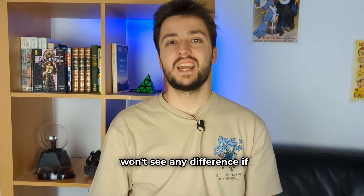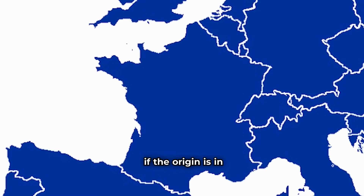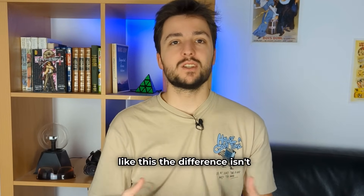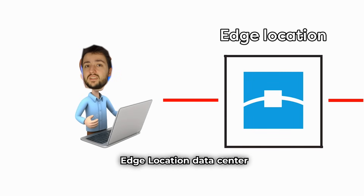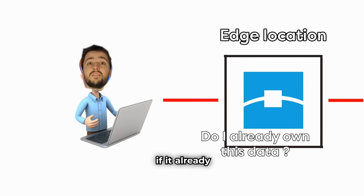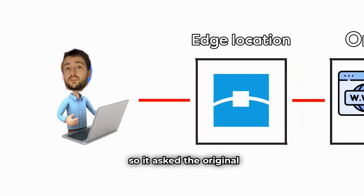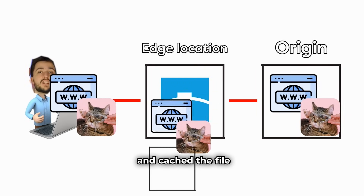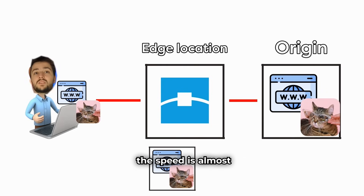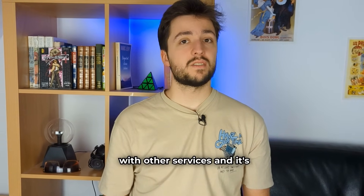It's quite possible that you won't see any difference if the origin server is very close to you. For example, if the origin is in Paris and you live in Paris, you won't necessarily see a big difference. But even with small files like this, you can already see the impact of CloudFront. Going back to our diagram: as soon as I pressed Enter, AWS directed me to the Edge Location Data Center closest to me. CloudFront asked itself if it already had the data I was interested in, then fetched it from the original S3 bucket. The Edge Location sent it to me and cached the file. When I reload the page, the speed is almost instantaneous because I only communicate with the Edge Location closest to me.